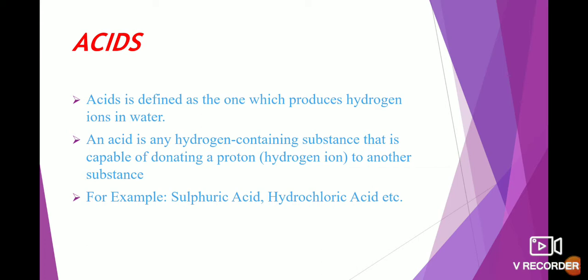Acid means the substance which produces H+ ion. H+ ion is also called a proton. Acid is any hydrogen-containing substance that is capable of donating a proton — that is, a hydrogen ion — to another substance. For example, sulfuric acid, hydrochloric acid, etc.